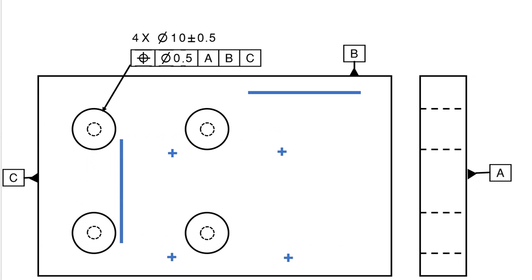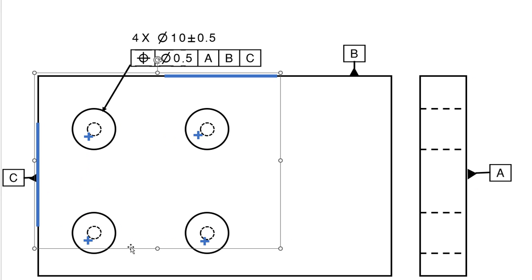But what if we try the same thing with our tighter tolerance zone? Well, I align to B and set my origin on C. And no, it does not pass. The centers are outside of my dashed tolerance zone.